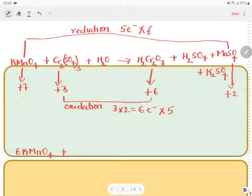6 KMnO4 plus 5 Cr2(SO4)3 plus H2O giving 5 H2Cr2O7 plus H2SO4 plus H2SO4 plus 6 MnSO4 plus K2SO4.